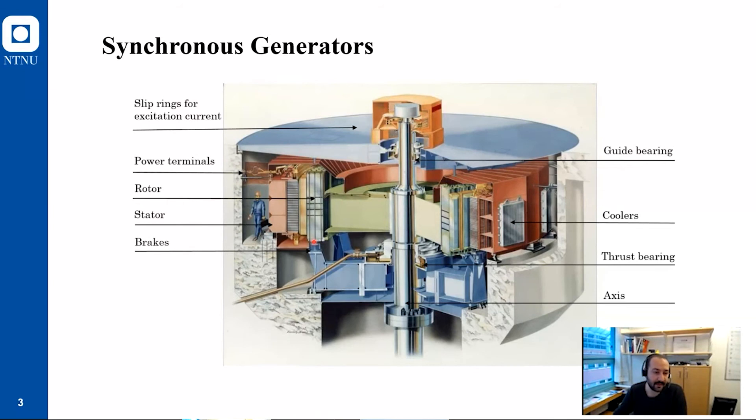A synchronous generator consists of different parts but for us as electrical engineers the most important parts are the stator and the rotor. The stator consists of a core and winding, and the rotor also consists of a core and winding. We put DC voltage into the rotor so the rotor starts to rotate and then we have a three-phase voltage in the stator part.